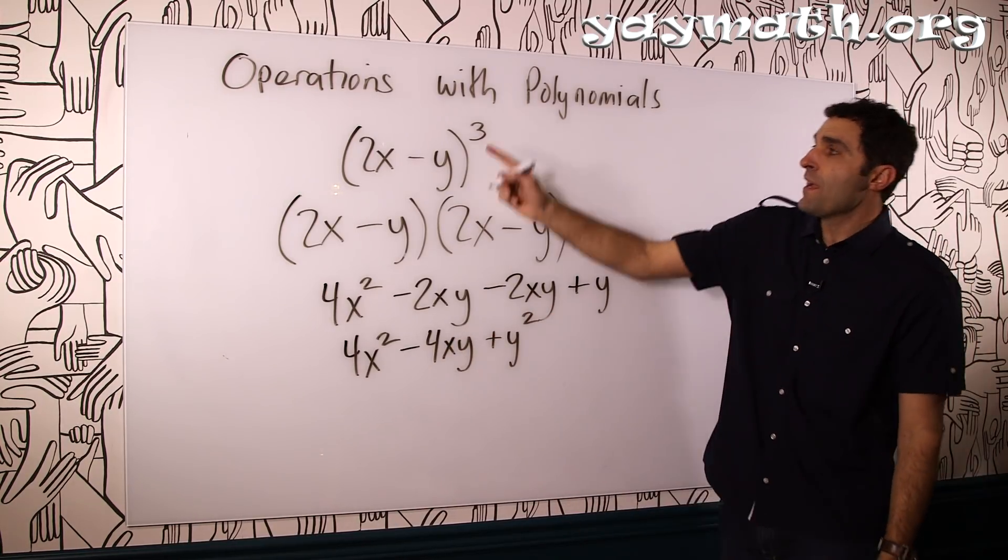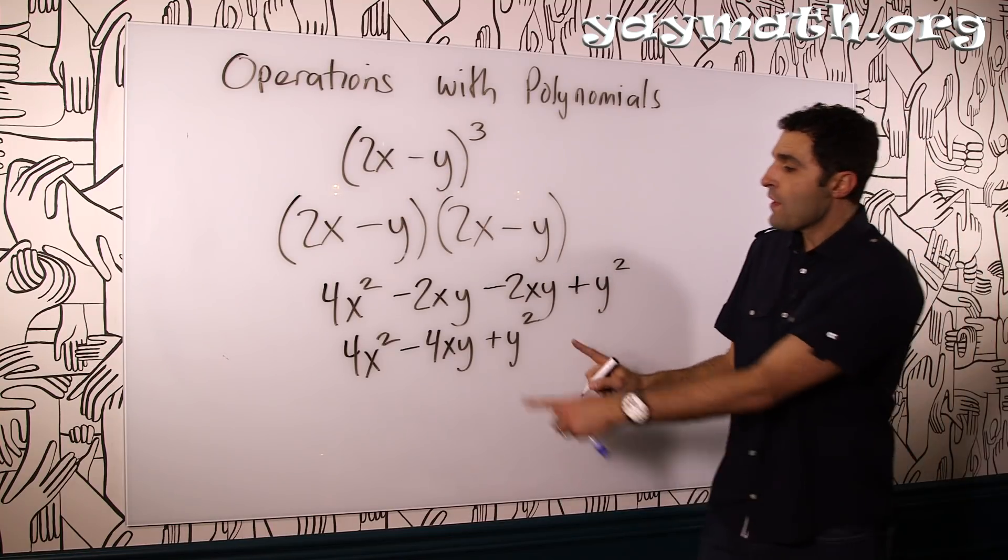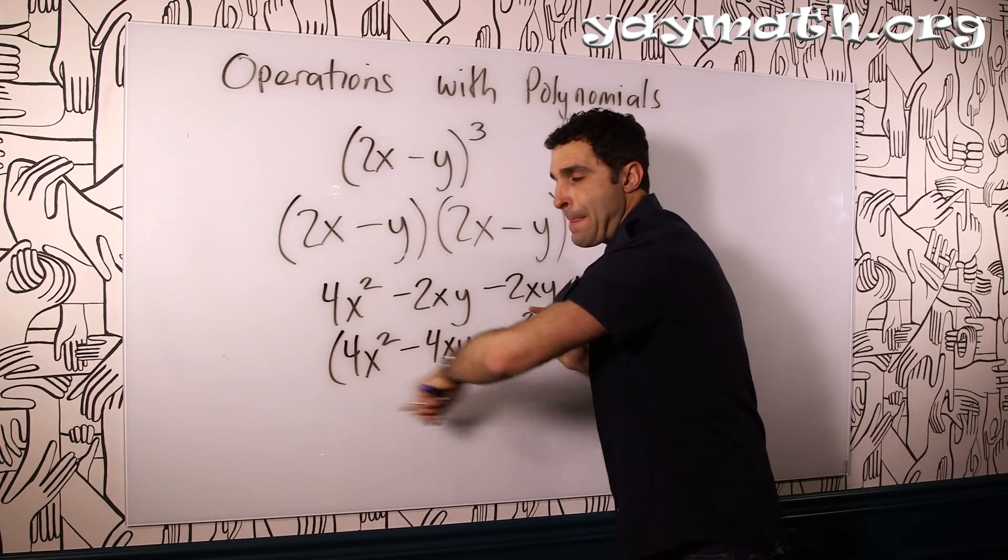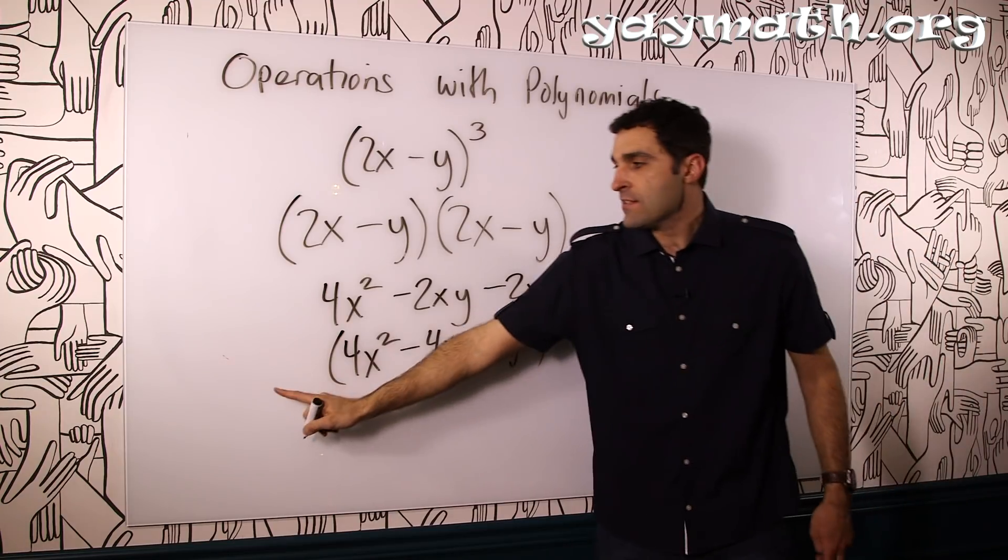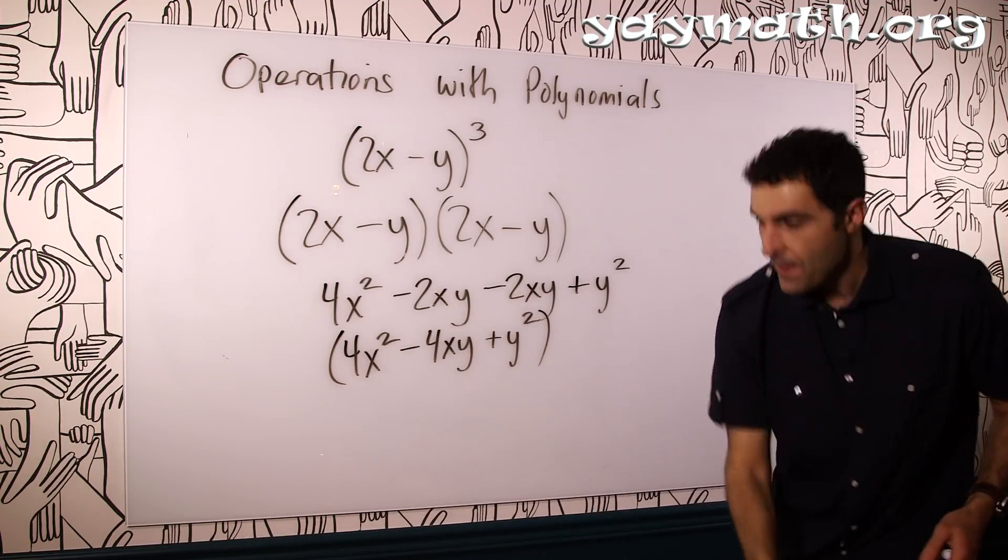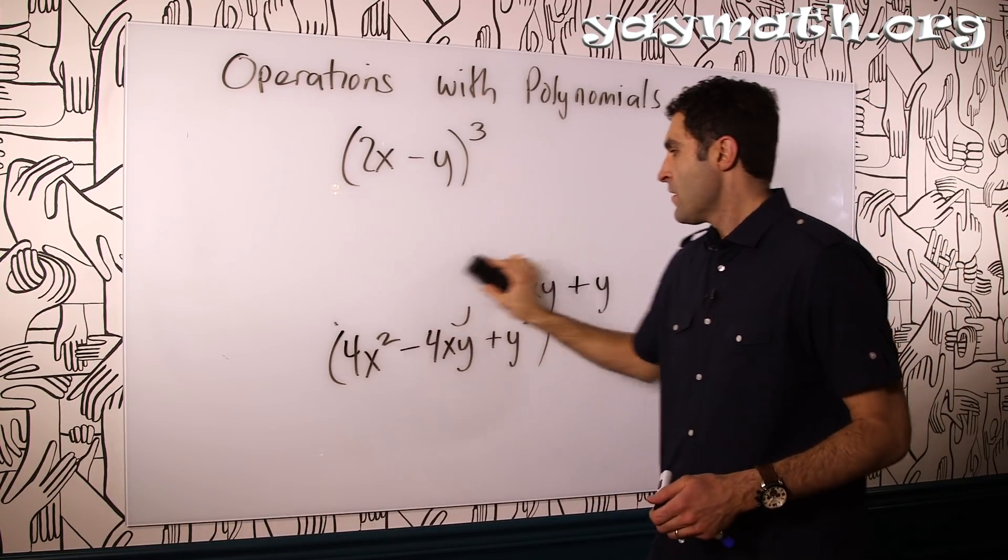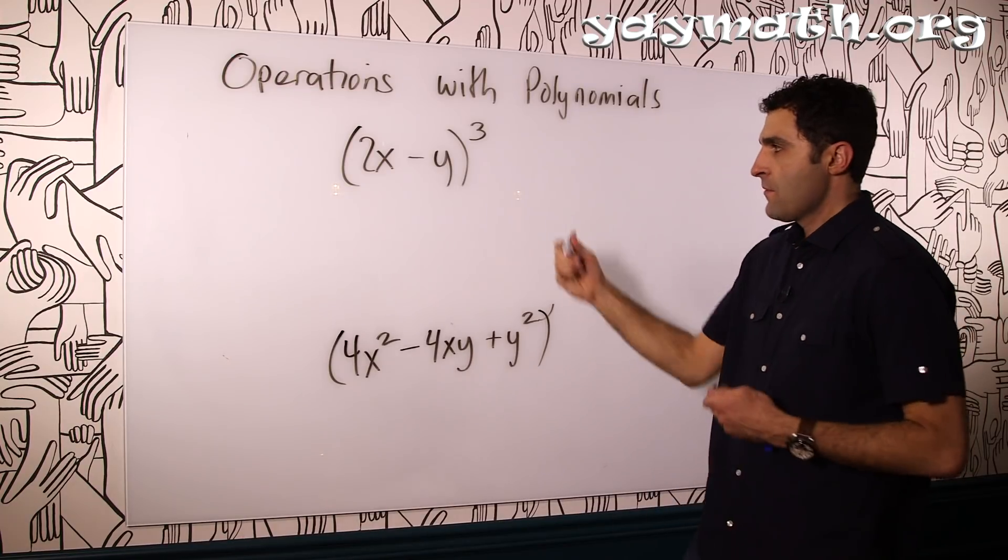This problem's halfway done because we have one more 2x minus y to go. Now we're welcome to write it to the left or the right of this thing. From experience, I've noticed that writing it at the front is a little smoother. I'll explain why. Let's make a little space for ourselves. Take this off. Bring this up.